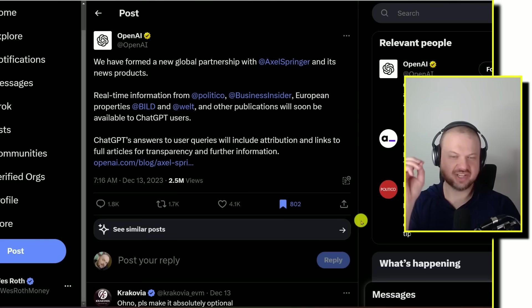And this piece of news was very interesting. So OpenAI is partnering with some news outlets to pull real-time information from them. So when you ask ChatGPT for real-time news, it's able to pull from those news sources and then present those to you in real time. And then of course, they'll include attribution and links to full articles for transparency, et cetera.